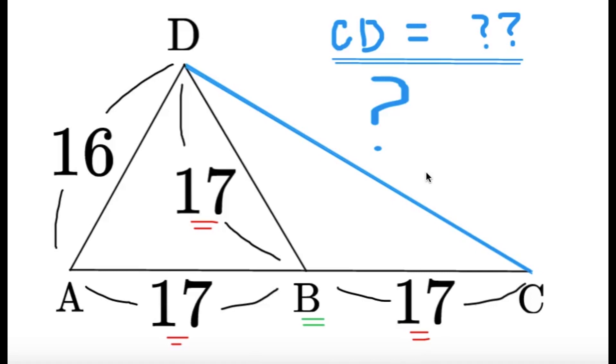Hello, hello, it's Tumplet here. Here's an item on geometry. Given this figure, triangle ADC, B is the midpoint of AC, and some of the side lengths are highlighted over here.